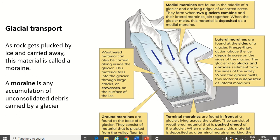The first type is a lateral moraine. Lateral moraines are found at the side of the glacier — the word lateral means side. Freeze-thaw action above the ice deposits scree on the sides of the glacier. Freeze-thaw action is a form of mechanical weathering, and scree is bits of broken down rock. That rock gets broken down and transported in the side of the glacier as a lateral moraine. These lateral moraines can also erode the side of a valley as they move.